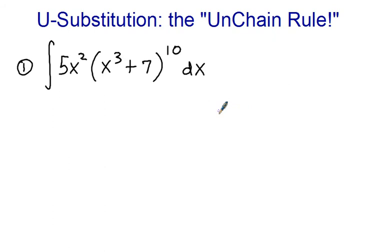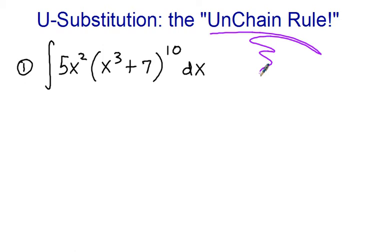Hi there. In this video, we'll discuss a technique for finding anti-derivatives known as u-substitution. Just to keep in mind, we know there's a chain rule out there for derivatives. You could think of this as the un-chain rule, in the sense that we're looking at the chain rule backwards.